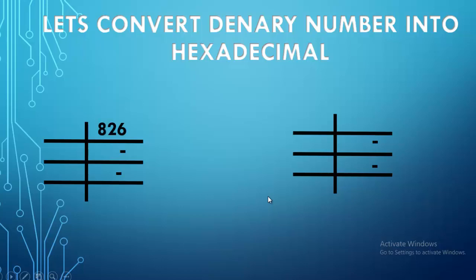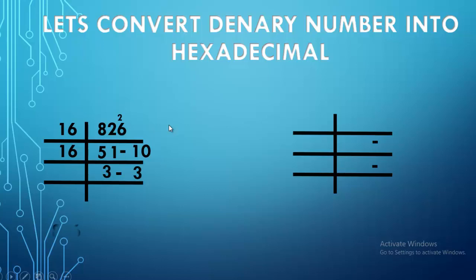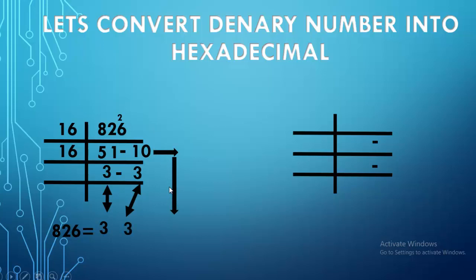Part E: denary number 826. Divide by 16: 16 times 5 is 80, remainder 2, giving 26. Divide 26 by 16: 16 times 1 is 16, remainder 10. Divide 51 by 16: 16 times 3 is 48, remainder 3. Final hexadecimal value: 3, 3, and 10 becomes A. So 826 in denary equals 33A in hexadecimal.